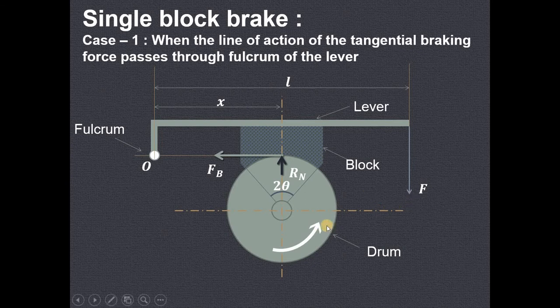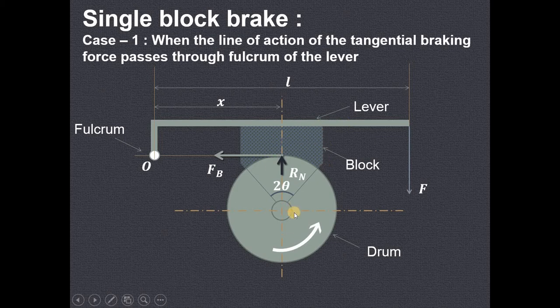This is the rotating drum which we want to stop by applying the braking force F. This is the brake drum, and this is the braking force which is applied on this particular lever. This is the block or shoe which is pressed against this particular drum so that the rotating drum will be stopped.